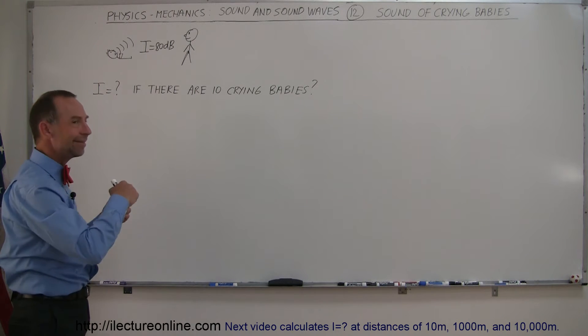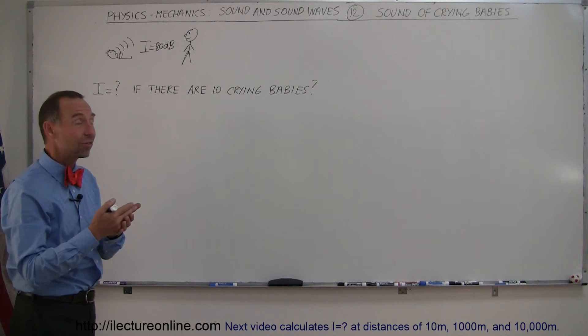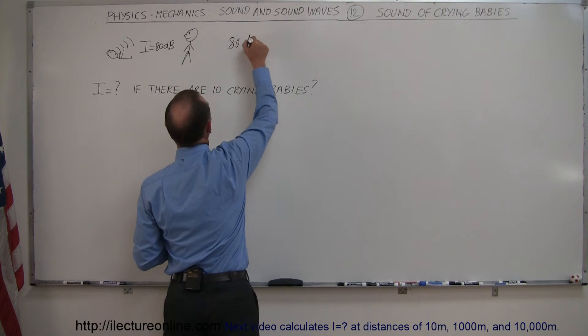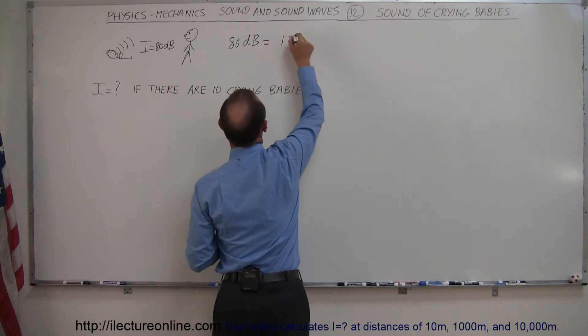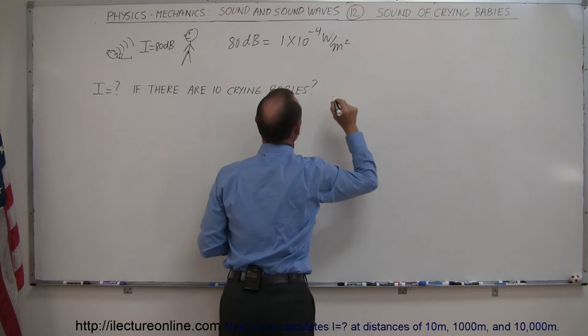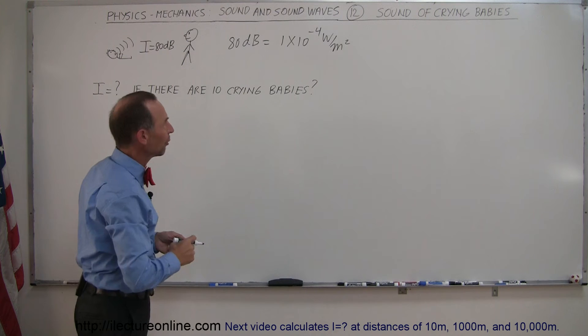We need to convert that back to the intensity in the regular intensity scale of watts per square meter. 80 decibels is equal to 1 times 10 to the minus 4 watts per square meter. Of course if you don't remember that, we can go ahead and convert that.